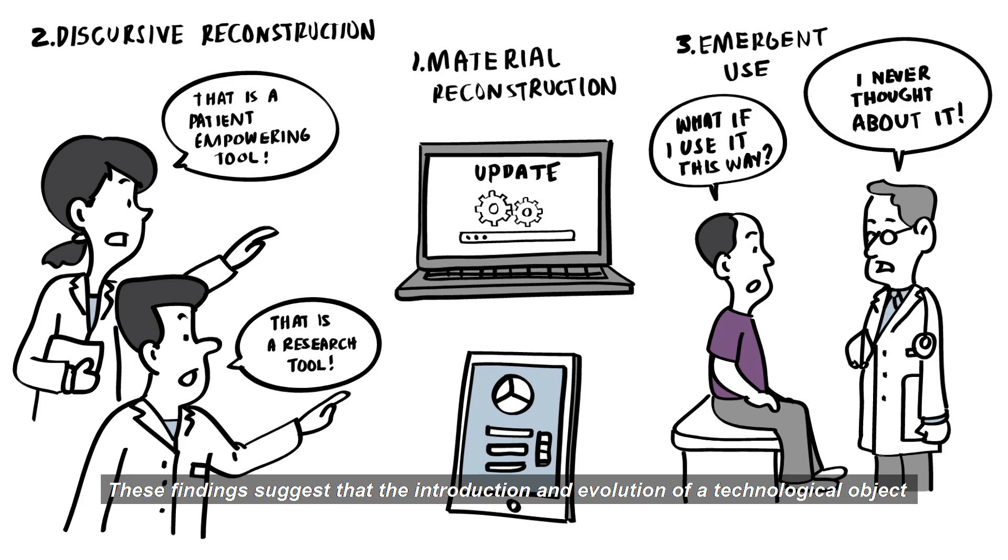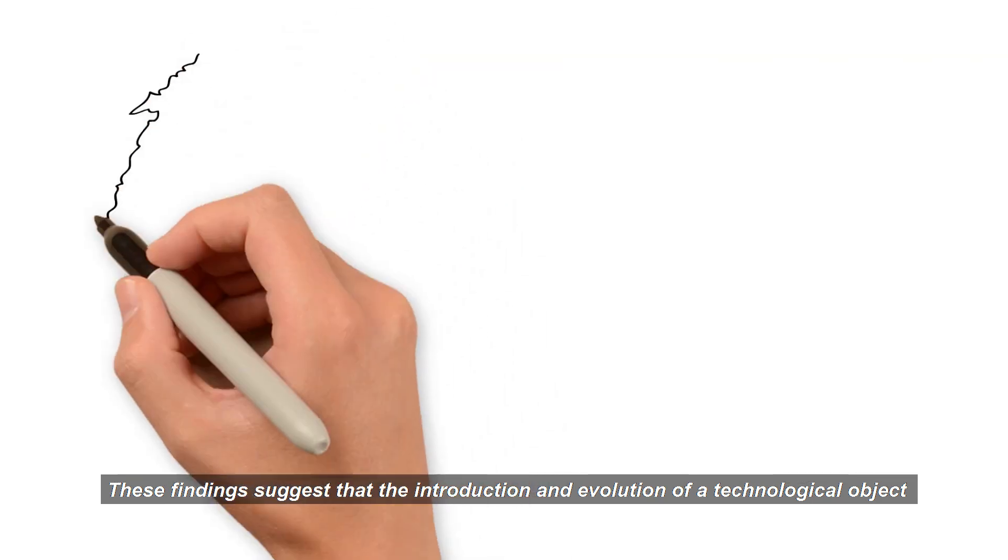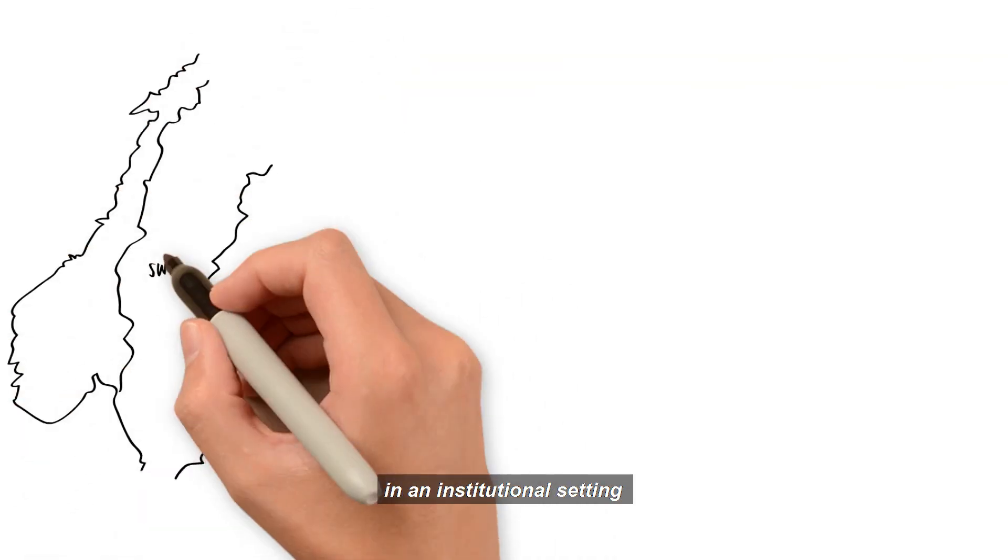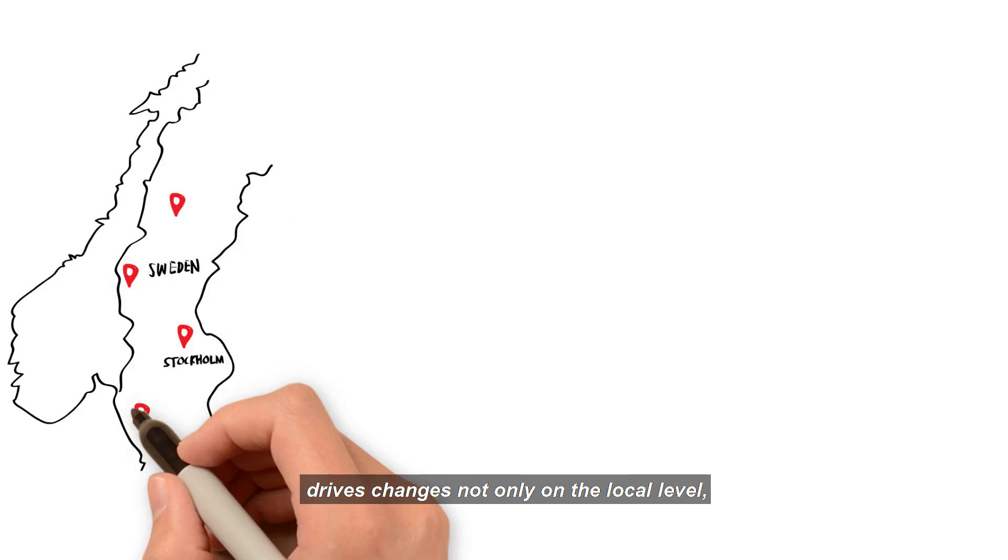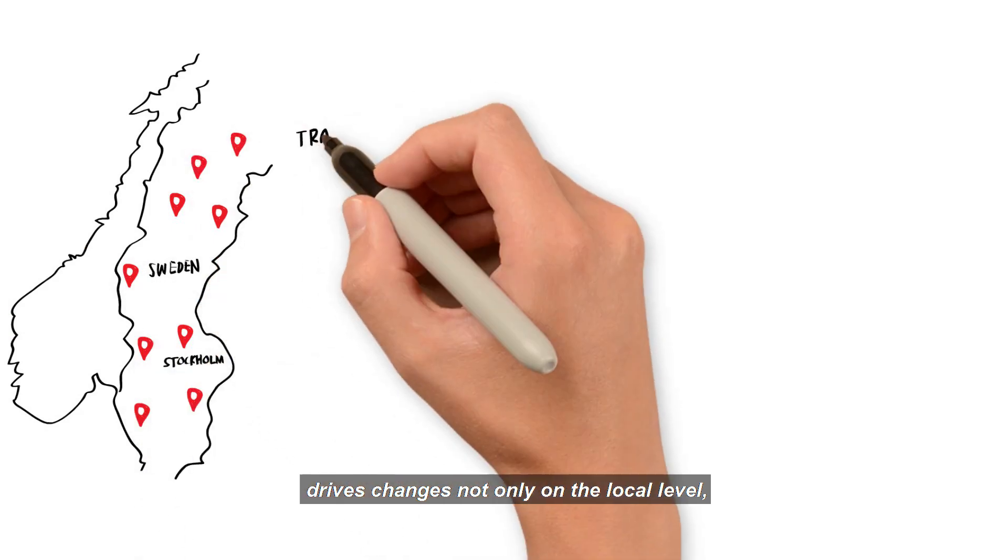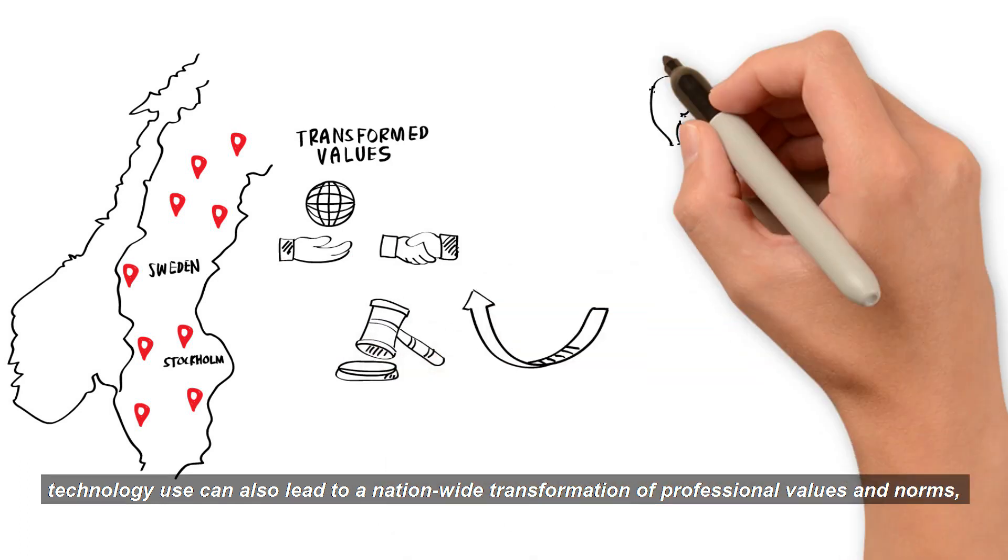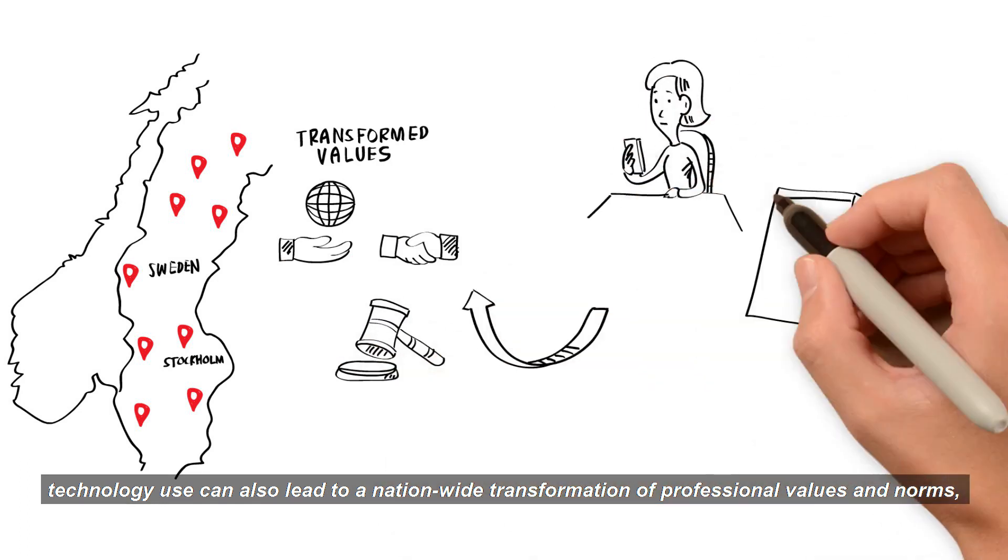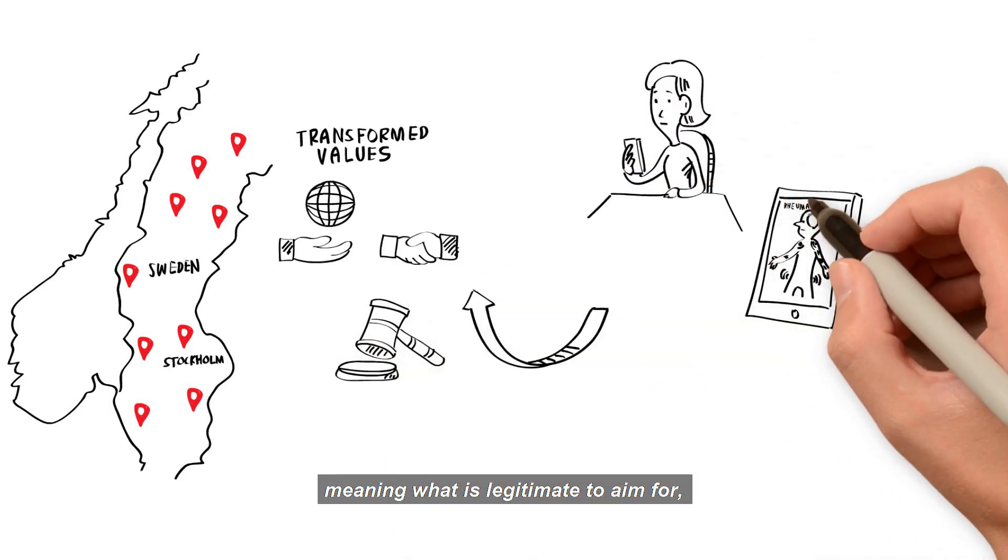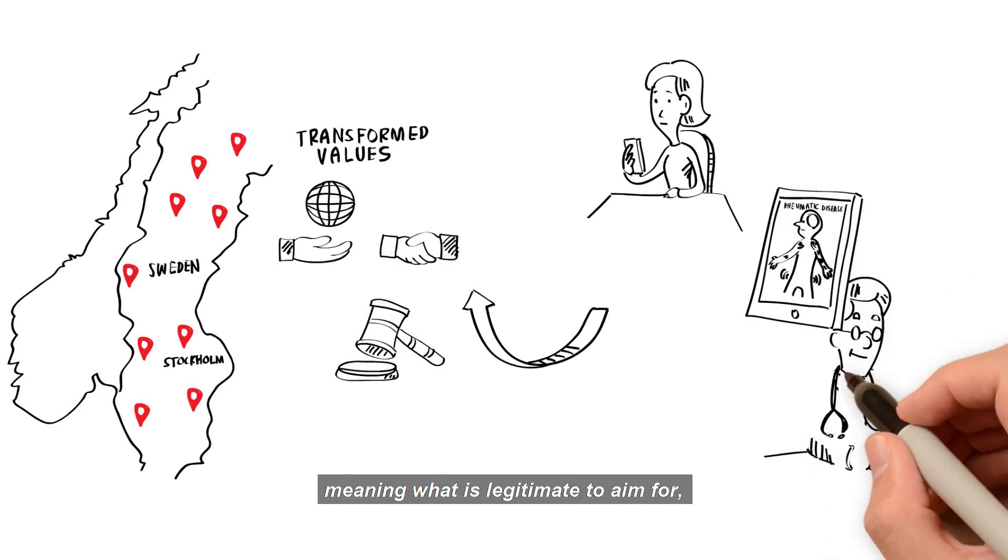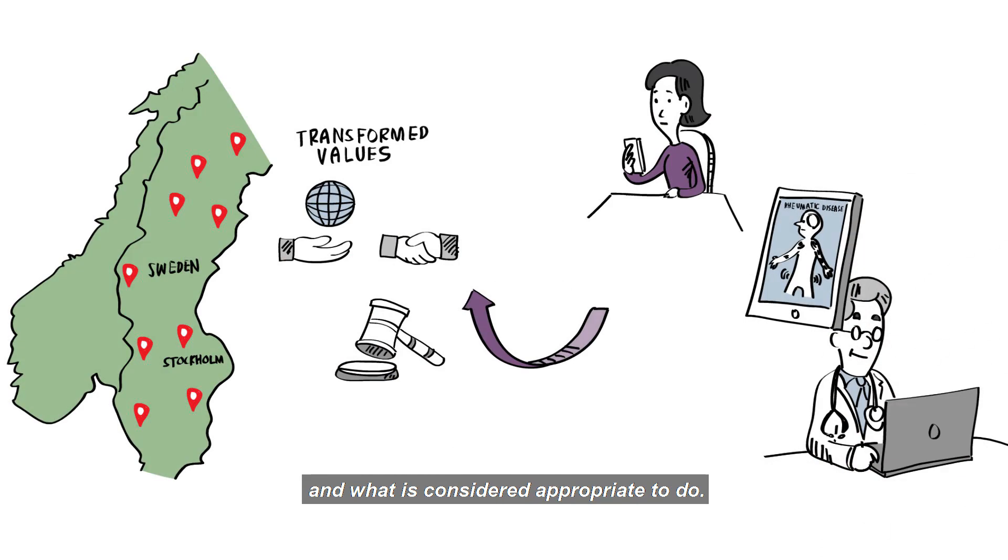These findings suggest that the introduction and evolution of a technological object in an institutional setting drives change not only on the local level. Technology use can also lead to a nationwide transformation of professional values and norms, meaning what is legitimate to aim for and what is considered appropriate to do.